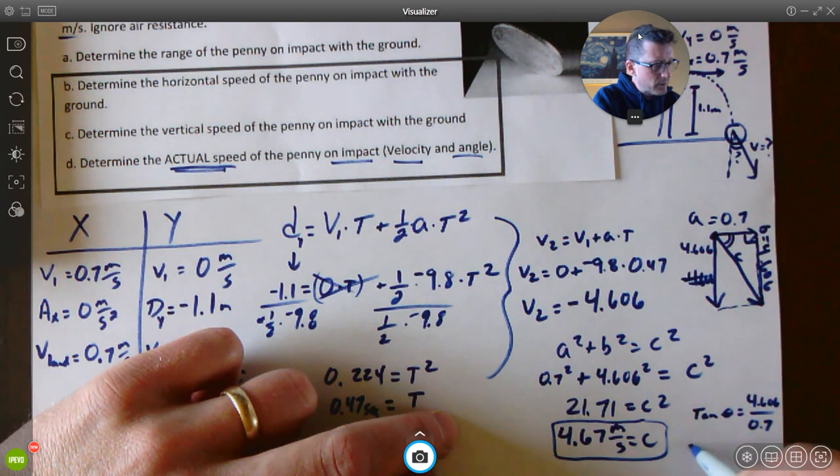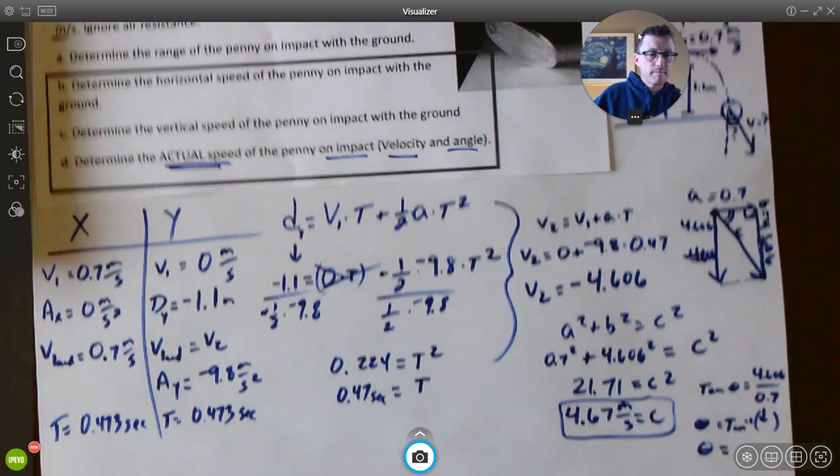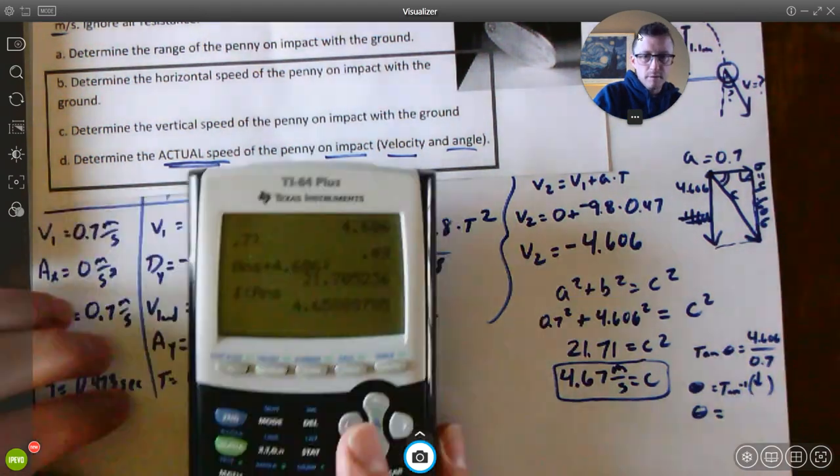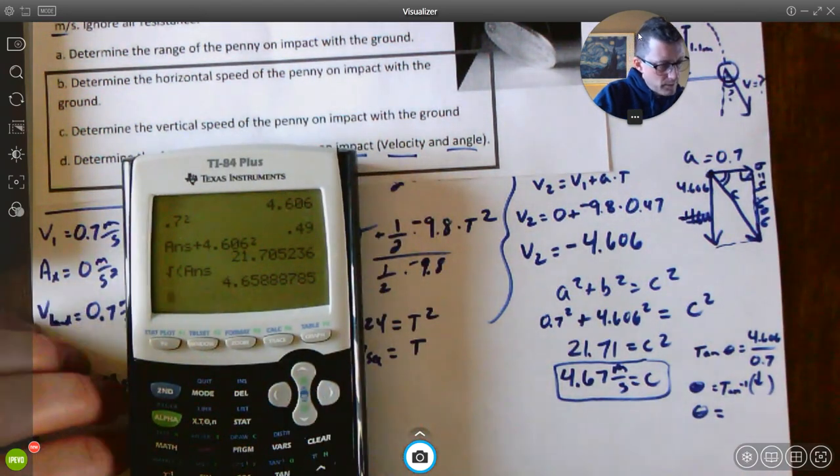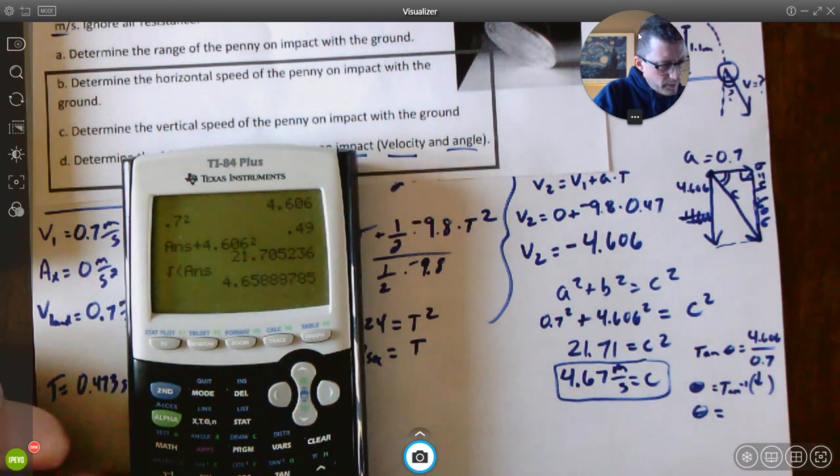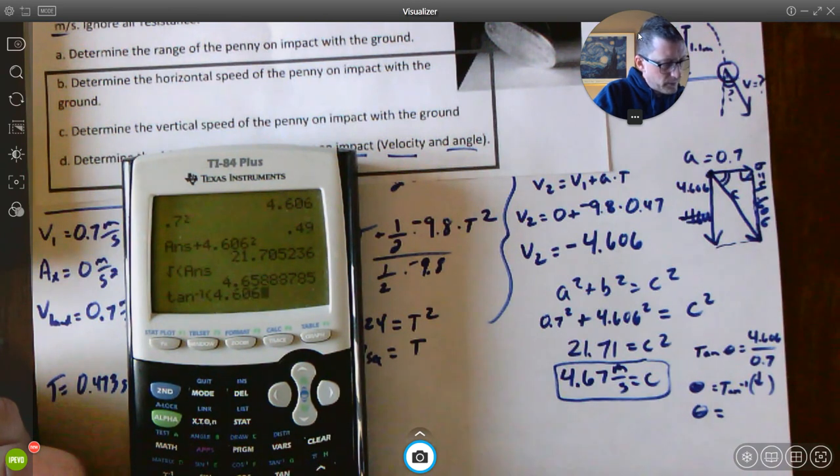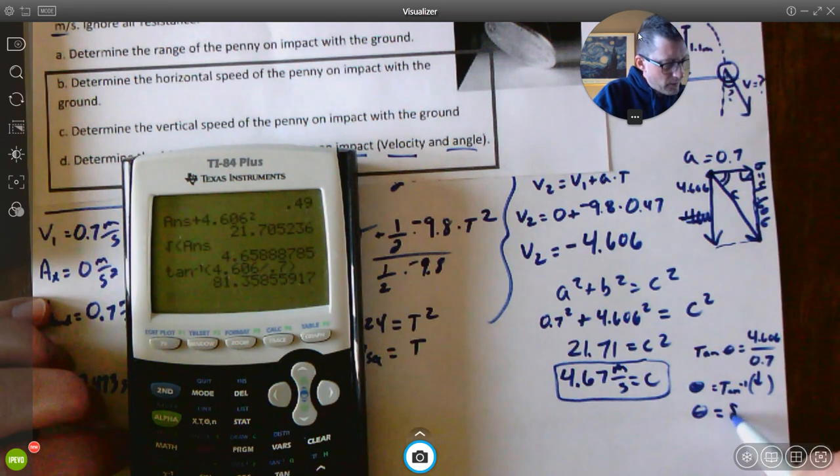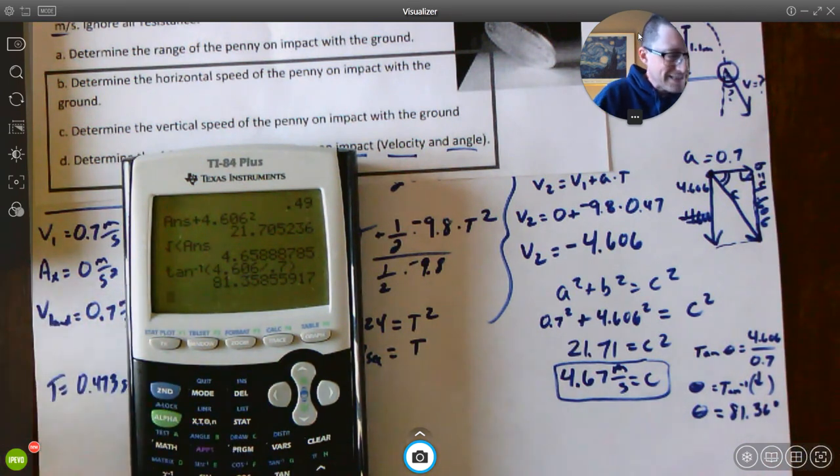You're going to have to do the inverse or the tangent negative 1 button. And when you do that, do that fraction, here's what you're going to get. I'm going to take a tangent. In fact, I'll just do this on my calculator so you can see how I'm doing this. For me, I'm going to do the second button, and then right there. And I'm going to do 4.606 divided by 0.7. And you get this number here, 81 point, I'm just going to round it two decimal places, 81.36 degrees.